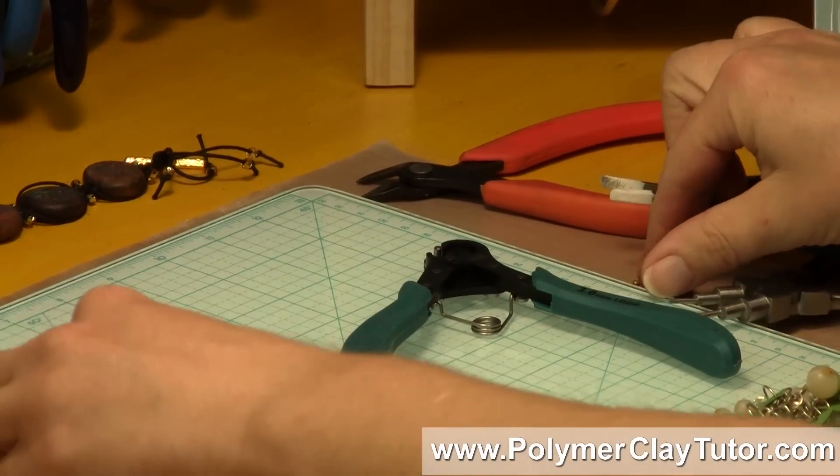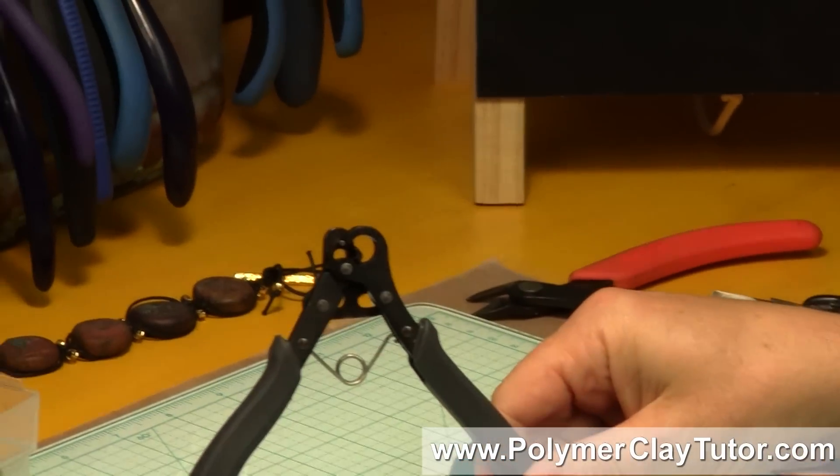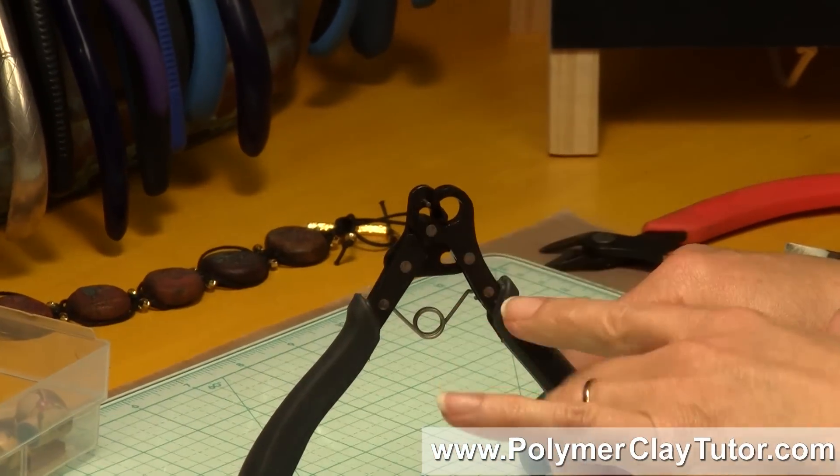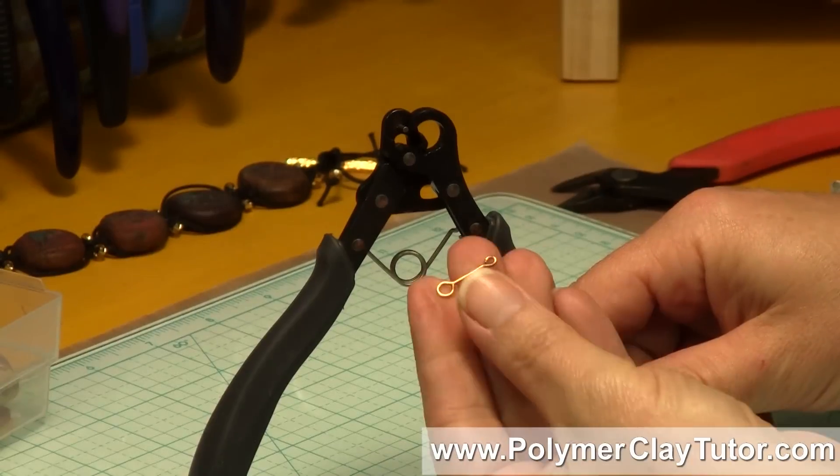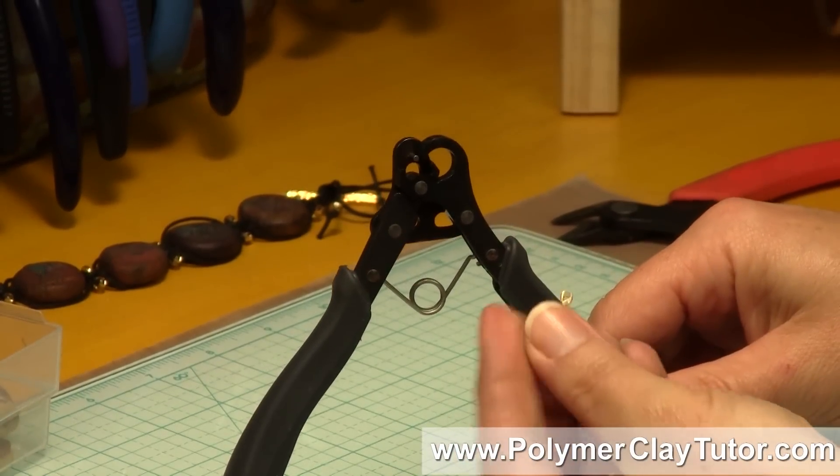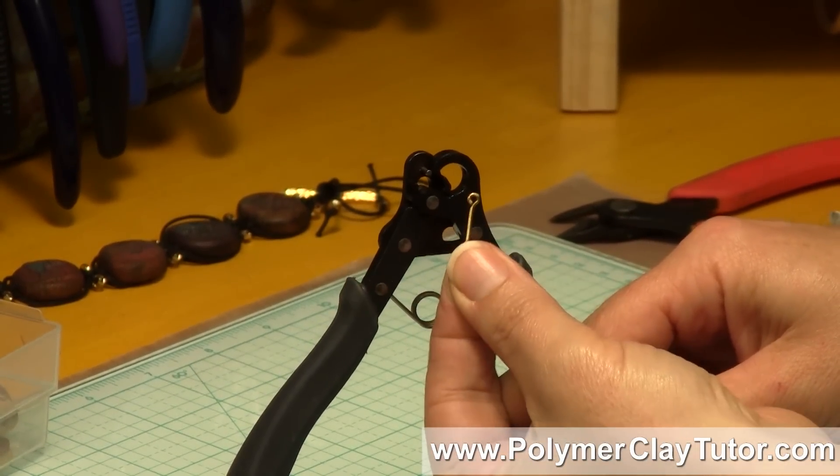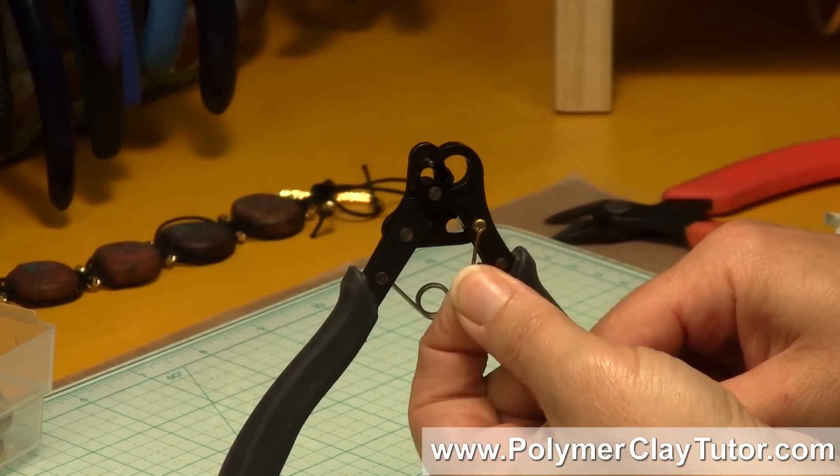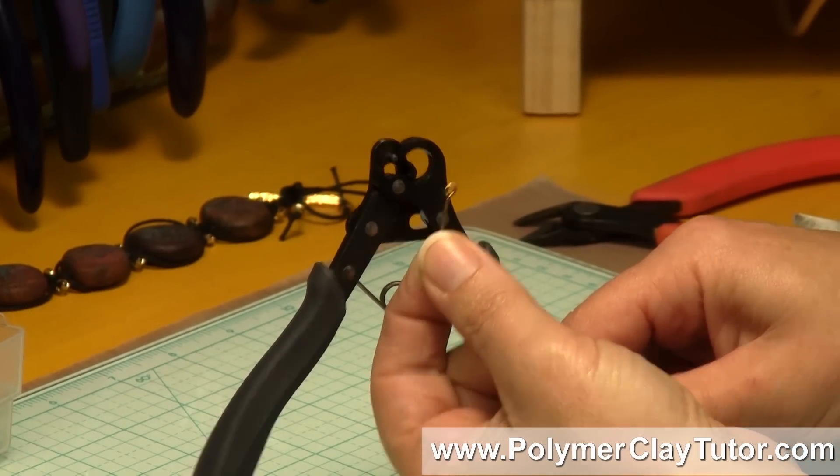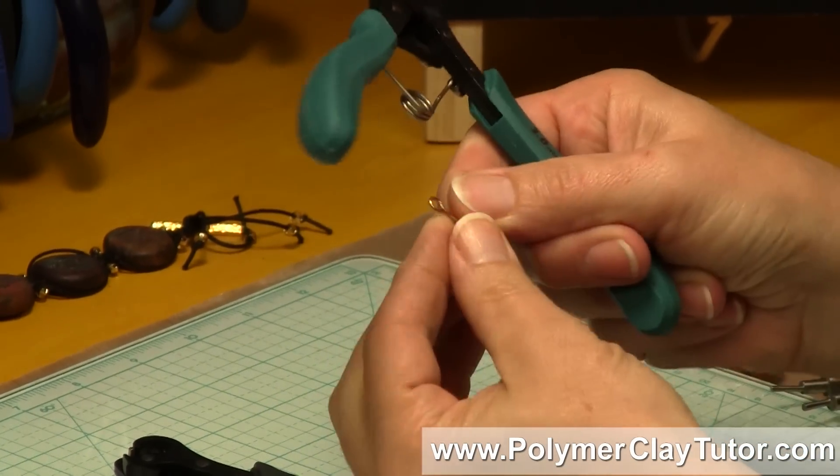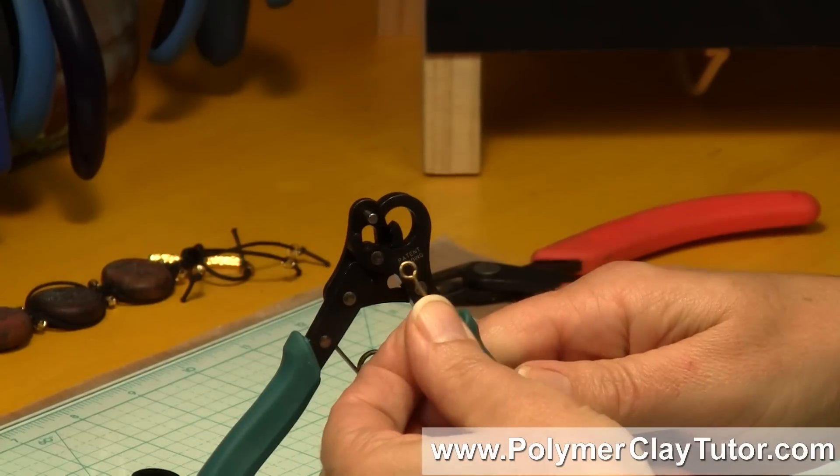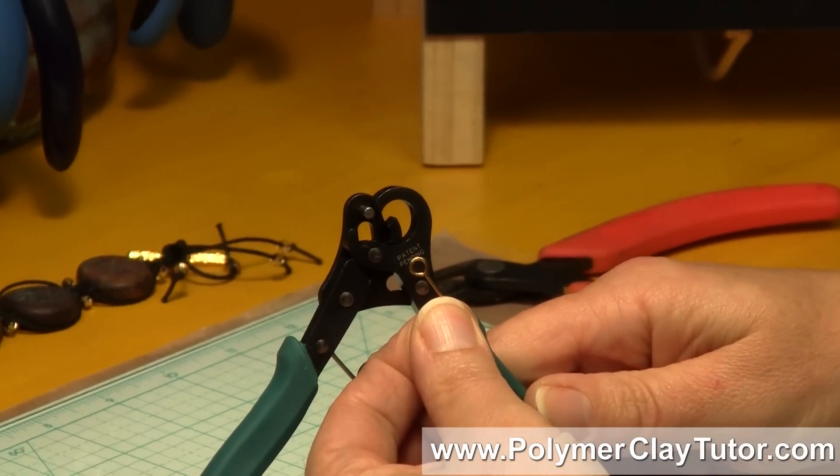Now there's two sizes, this is the original, and it's just called the One Step Looper, and it does a hole that is 1.5 millimeters size hole. The Big Looper has a little bit bigger hole here, and it is a 3 millimeter size hole, which is a lot bigger.